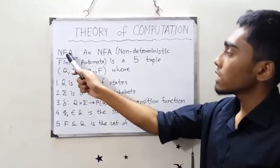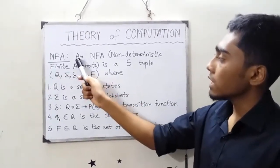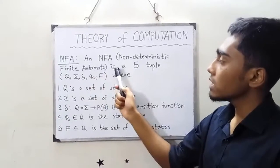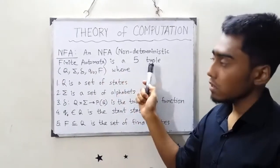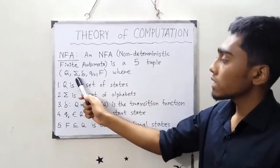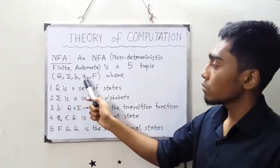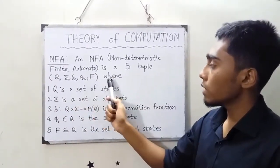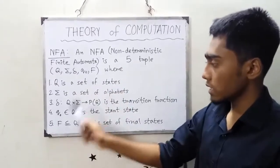NFA is a 5-tuple which is Q, sigma, delta, Q0, F — where these are the five components of the NFA definition.